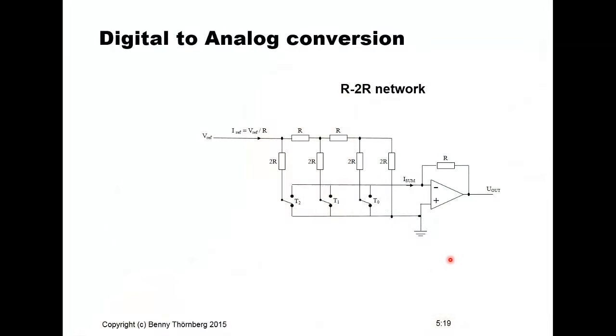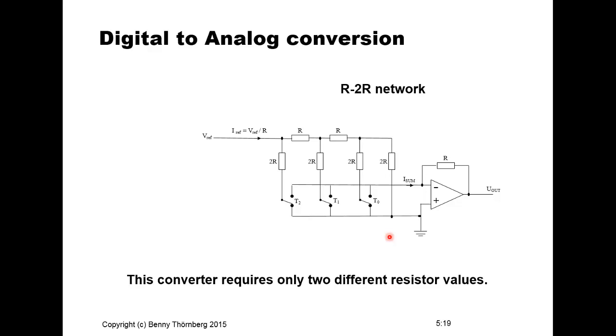The R-2R network is the solution to the problem of requiring many different resistor values. It really boils down to using only two resistor values. In this circuit diagram we have the same summing amplifier, but the resistance network is changed so that we only have two resistor values — R and 2R. The main benefit is that we only need two resistor values, which is much simpler to integrate on a single chip.